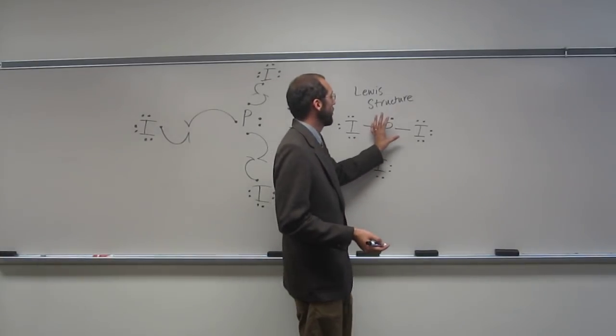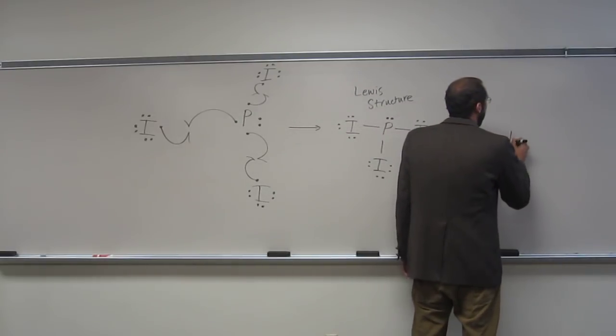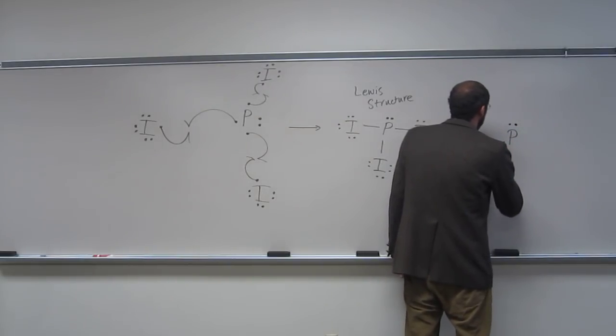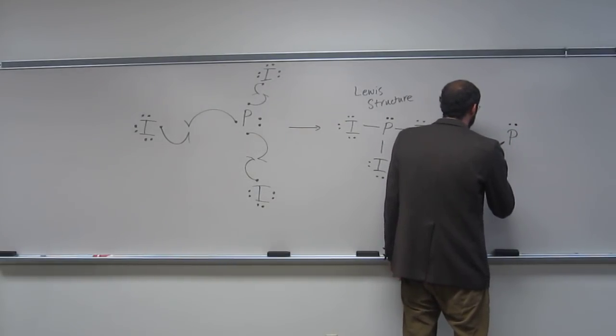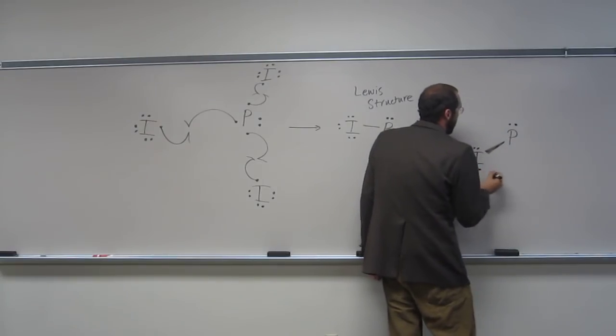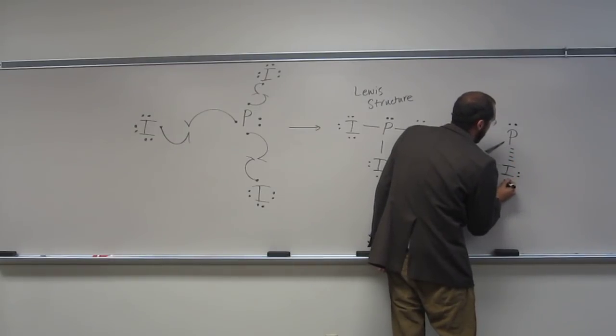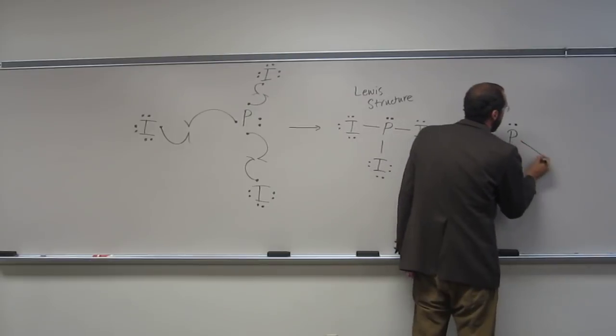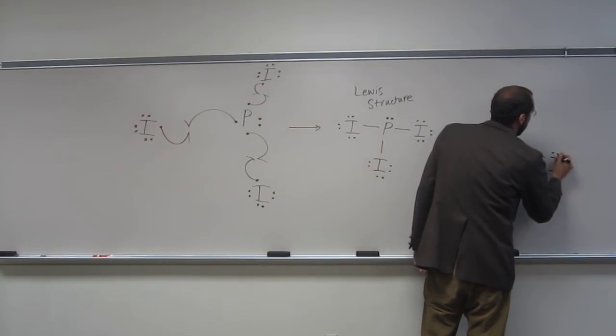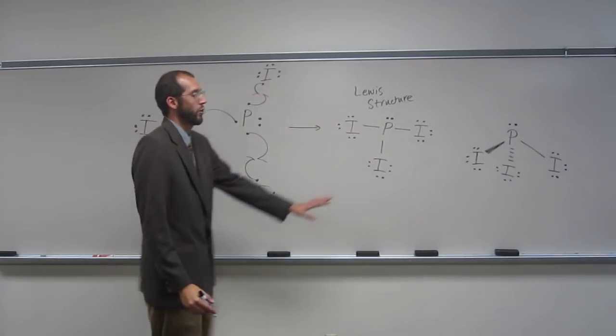So in order to adjust for that, we have to recall that they are spheres, atoms. And when we draw phosphorus triiodide, we're going to draw it showing the relative direction of those bonds. So this is trigonal pyramidal.